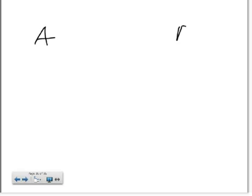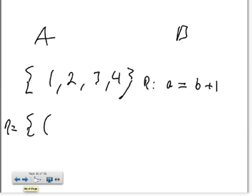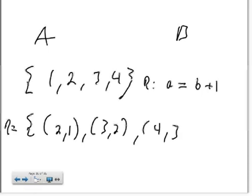A simple mathematical example of a relation: if we have two sets A and B with the same elements — integers 1 through 4 — and we want to describe the relationship where A equals B plus 1, then the relation would contain the pairs (2,1), (3,2), and (4,3). That is our mathematical example of a relation.